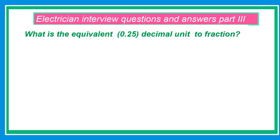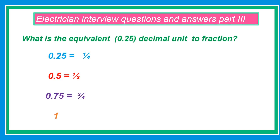What is the equivalent 0.25 decimal unit to fraction? 0.25 equals one quarter. 0.5 equals one half. 0.75 equals three quarters.